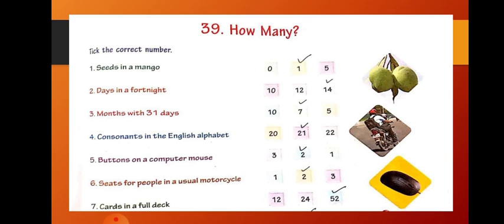Next one, days in a fortnight. Dear children, a fortnight means two weeks. In a week, there are seven days. So, 7 plus 7 is 14. Days in a fortnight, total number of days in a fortnight is 14.